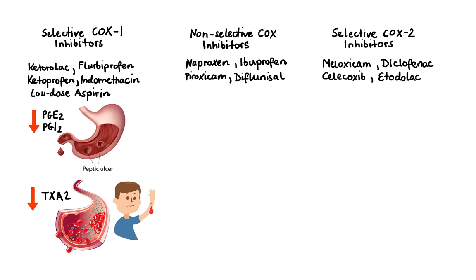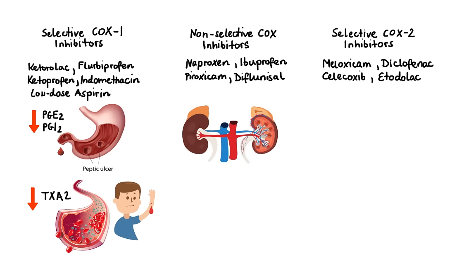The third major adverse effect of NSAIDs results from their actions on the kidney. Renal prostaglandins, specifically E2 and I2 types, cause dilation of the renal efferent arteriole, which is important for maintaining glomerular filtration rate. Under normal conditions, these prostaglandins have only minimal effect on renal perfusion. However, when kidney function becomes compromised — for example due to heart failure or old age — prostaglandin production becomes a significant factor in preservation of renal blood flow. Therefore, NSAIDs may increase the risk of kidney injury in susceptible patients.